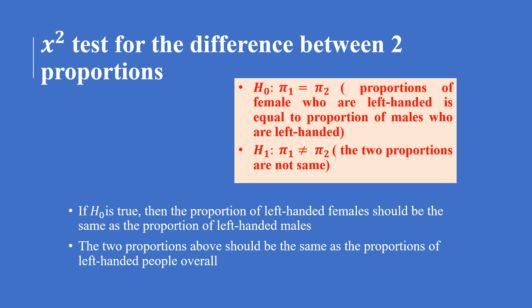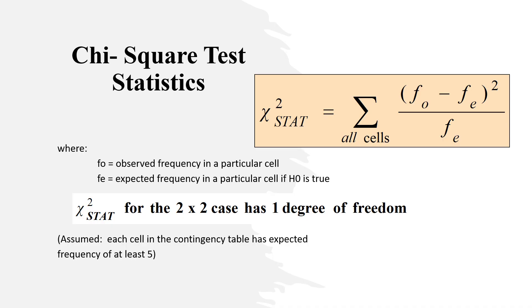According to the null hypothesis, the two proportions should be the same as the overall proportion of left-handed people. Our next step is to calculate the test statistic using the formula where fo is the observed frequency and fe is the expected frequency under the null hypothesis. The degree of freedom for the two-by-two case is one, assuming each cell has an expected frequency of at least five.